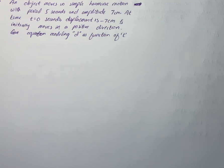At time t equals 0 seconds, displacement is minus 7 cm and initially moves in a positive direction. We have to give an equation modeling d as a function of t.